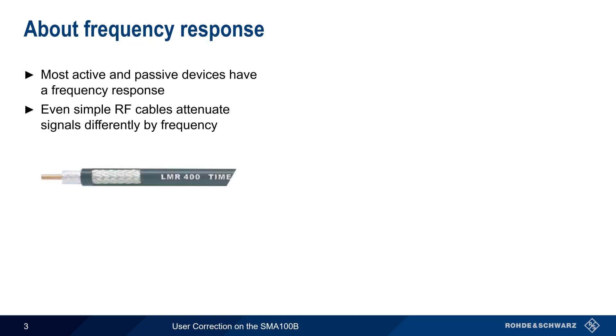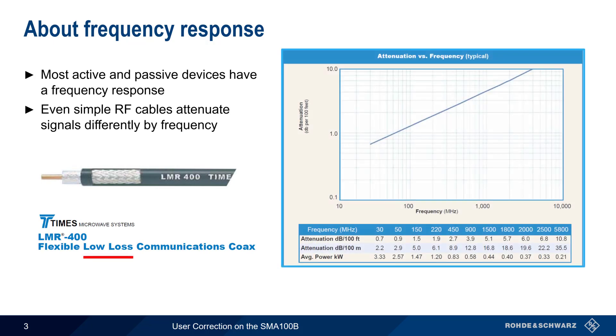For example, Times LMR400 cable is advertised as a low-loss cable, but its attenuation per 100 meters goes from a modest 3 dB at 50 MHz to over 30 dB at 5 GHz. The same behavior can be found in many other common components like connectors, couplers, and attenuators.